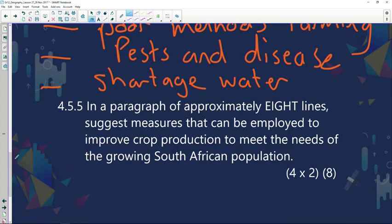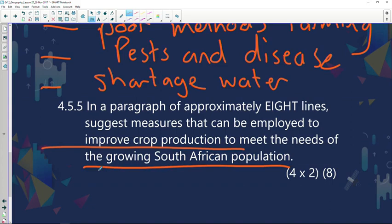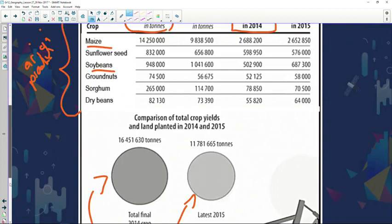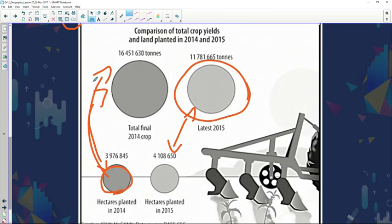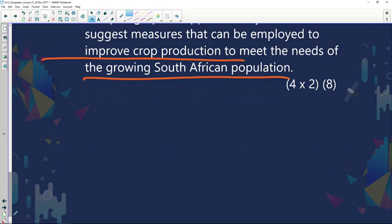Now if you look at question 4.5.5, in a paragraph of approximately eight lines, suggest measures that can be employed to improve the crop production to meet the needs of the growing South African population. What we need to do on the end of the day, we need to improve what's being delivered and how we do it by using the smallest amount of hectares being planted. So we want a positive ratio, least amount of land and most output. So what can we do to increase our output of crop farming in South Africa? First of all, what we can mention is better farming methods.